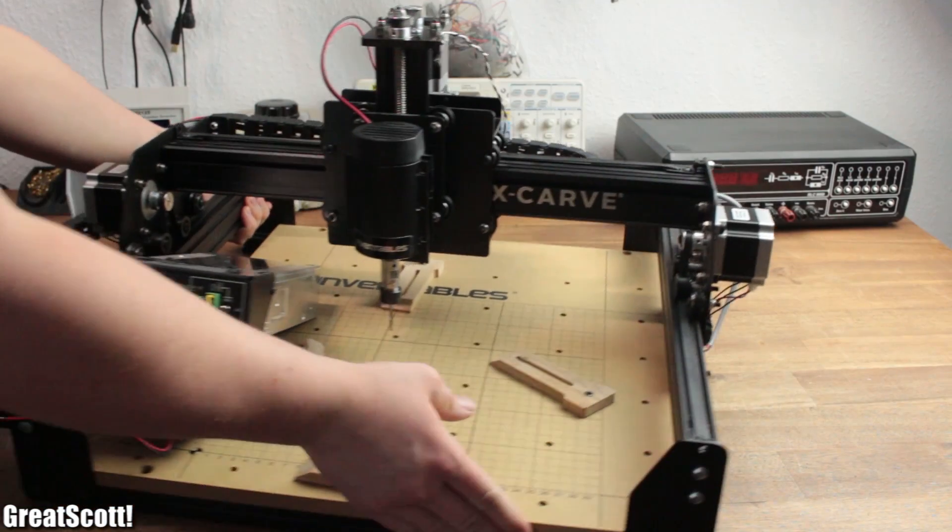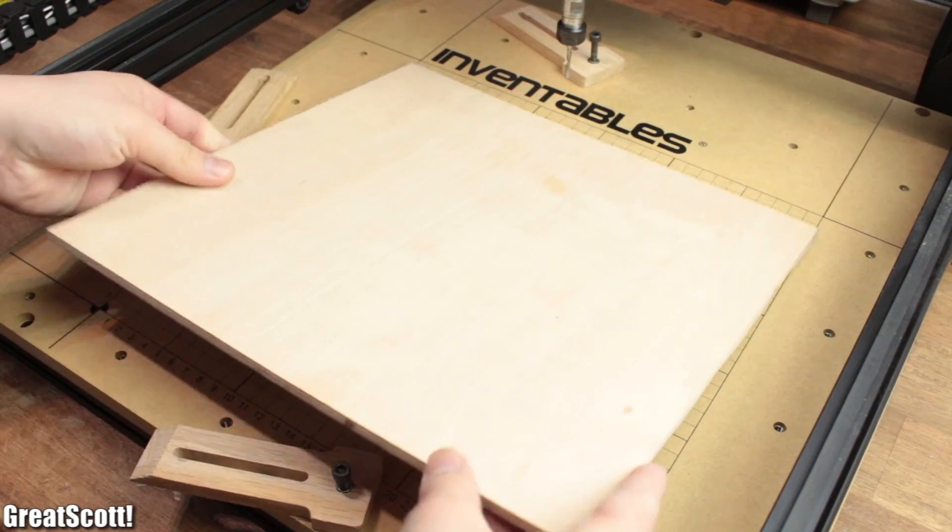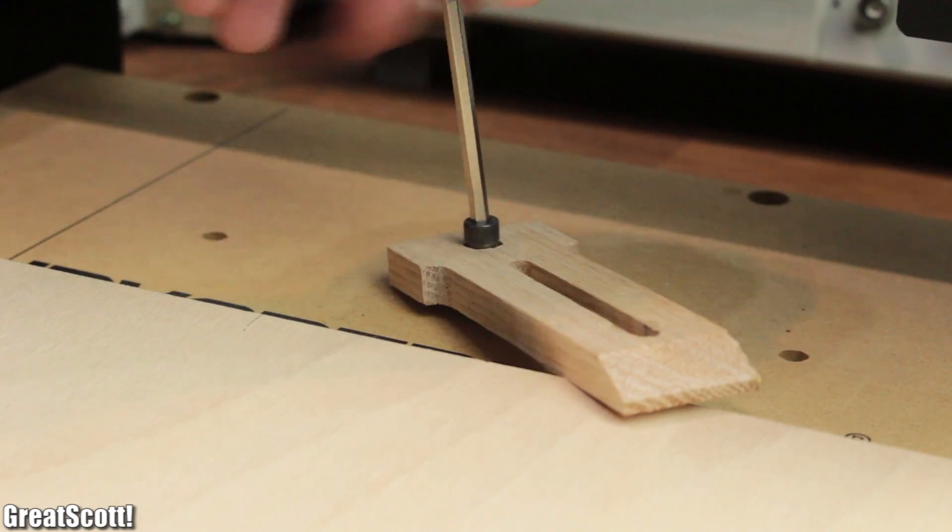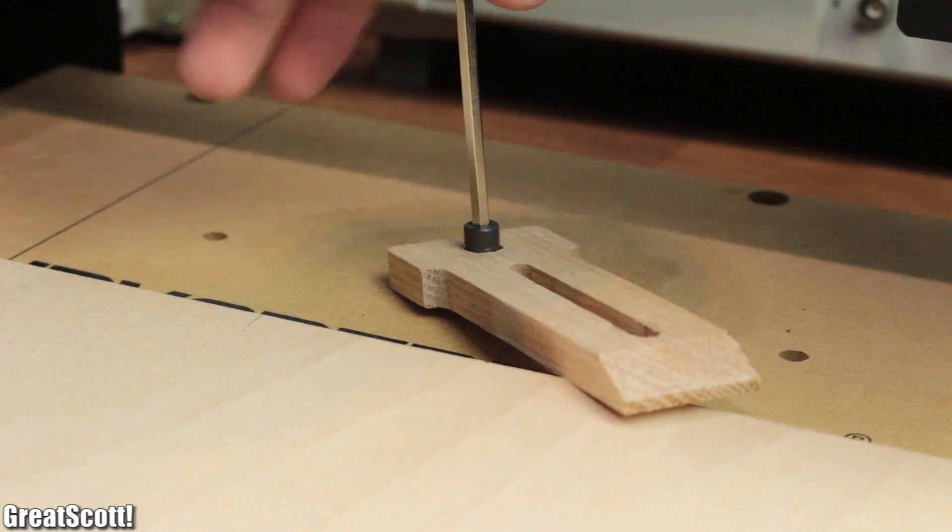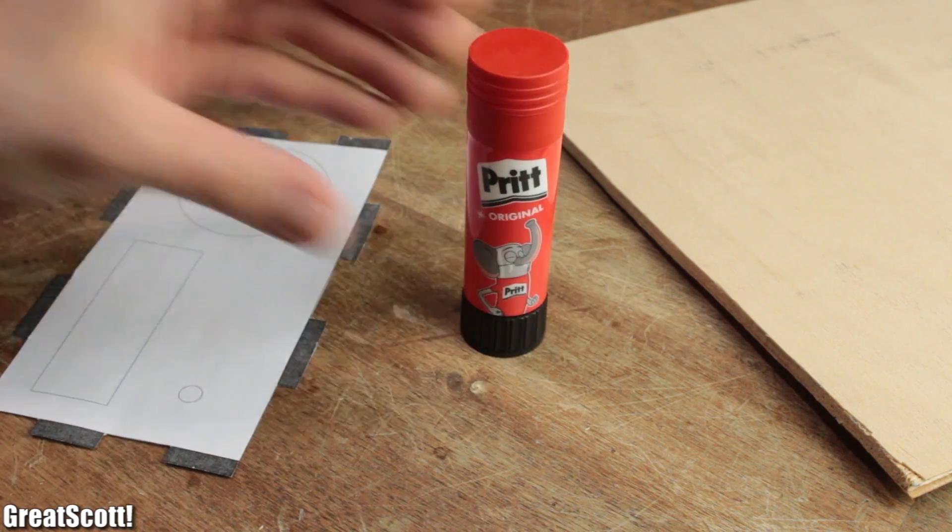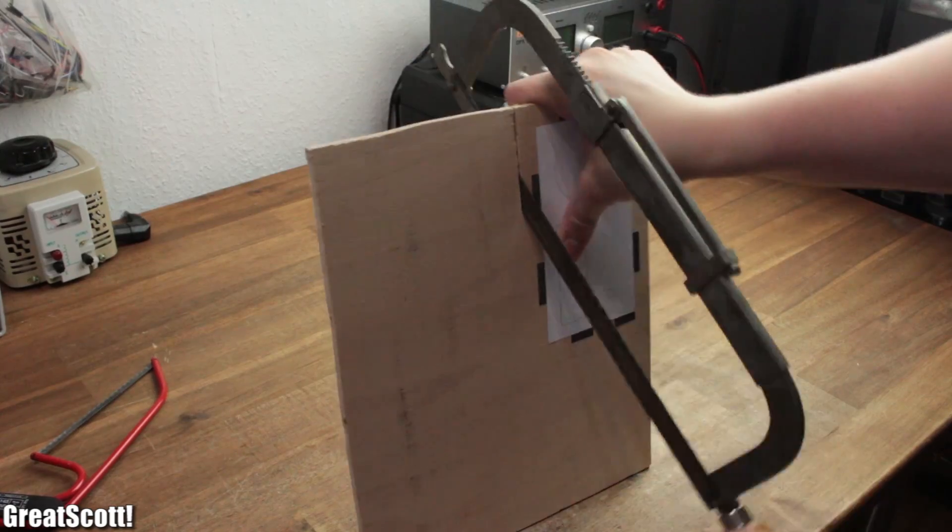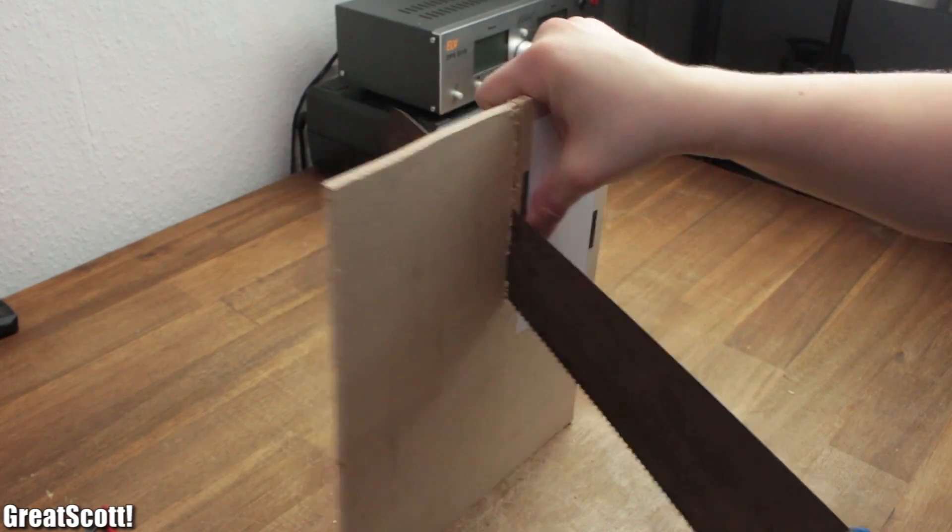Now to cut out the design from the plywood I used my X-Carve CNC machine. But don't feel discouraged if you don't have access to such machines. You can easily use a glue stick to stick the paper blueprint onto the woods and use all kinds of saws to follow the outline.